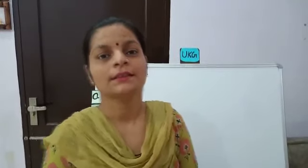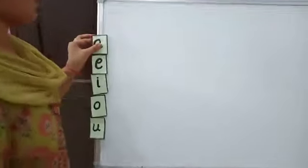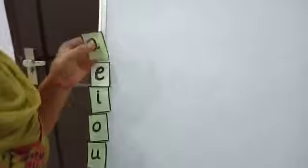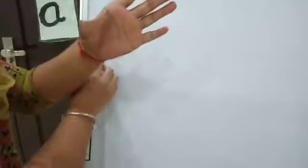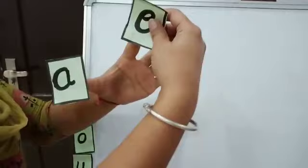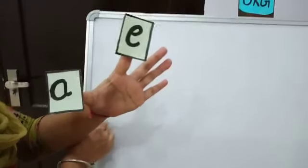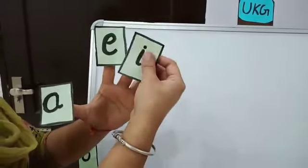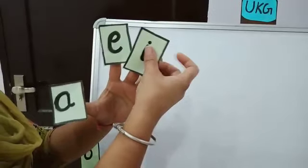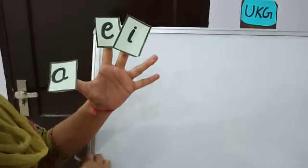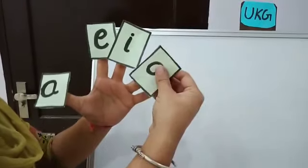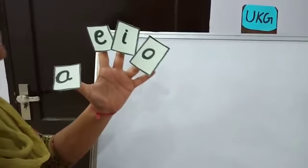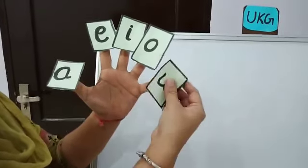Tell me the names of the vowels. Yes. The first vowel is A. Second is E. Third is I. Fourth is O. And the last is U.